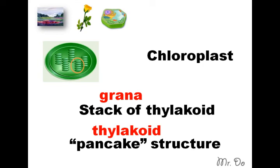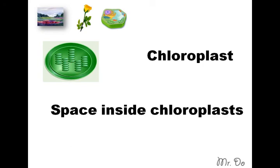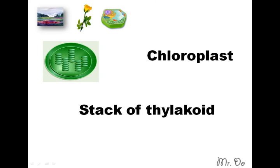Okay, that's all — just three structure names for now, so you don't have to freak out. What is the space inside the chloroplast called? The stroma. And a little pancake? A thylakoid. What about the whole stack of pancakes? The grana.